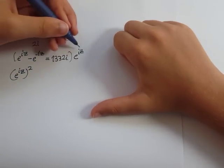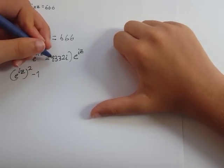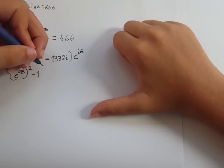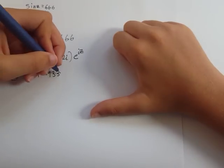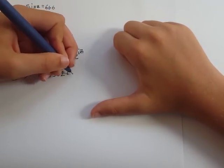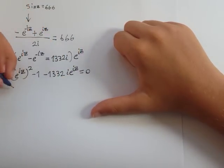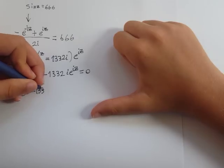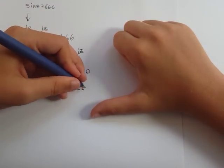This becomes e to the iz squared. The powers add to 0, so e to the power of 0 is 1. We move this to the other side so it looks nicer: e to the iz squared minus 1332i times e to the iz minus 1 equals 0.